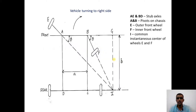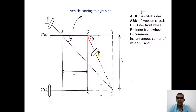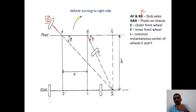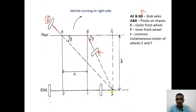Consider a vehicular arrangement where AE and BF are stub axles or short axles on which the two front wheels E and F are mounted. A and B are the pivot points on the front axle of the chassis. E will be the outer front wheel when taking a right turn, because the wheel away from the right side is the outer front wheel.